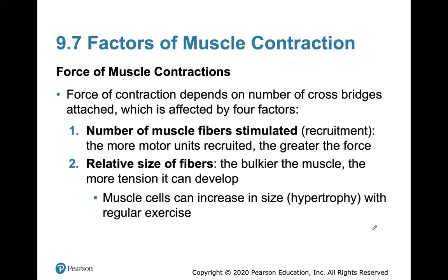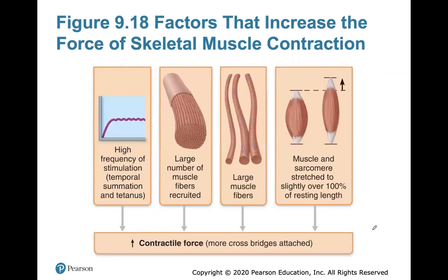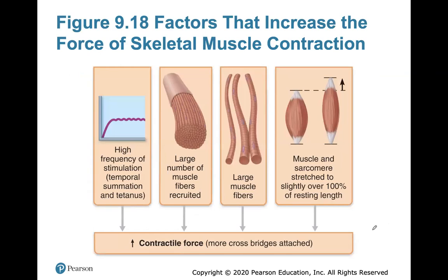The force of muscle contractions depends on the number of crossbridges attached, affected by four factors: the number of muscle fibers stimulated (recruitment); the relative size of the fibers — the bulkier the muscle, the more tension it can develop, and muscles can increase in size through hypertrophy with regular exercise; the frequency of stimulation — higher frequency means greater force as contractions add together; and the degree of muscle stretch — fibers with sarcomeres at 80 to 120 percent of normal resting length generate more force.